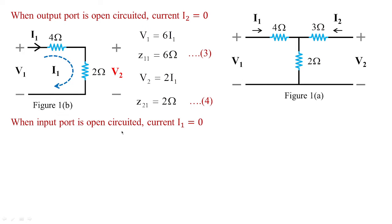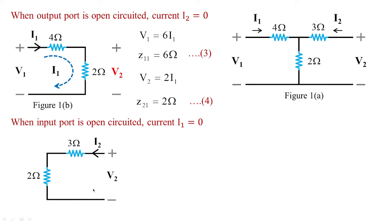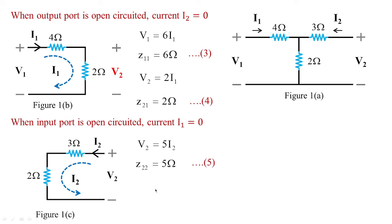Now when the input port is open-circuited, i1 becomes 0. This gives figure 1c, where current i2 flows into 3 ohms and 2 ohms connected in series. Therefore v2 = 5·i2, and z22 = v2/i2 (with input port open) equals 5 ohms.